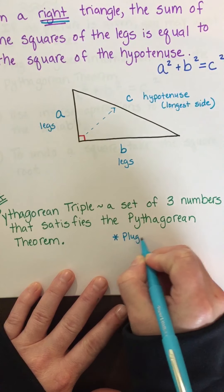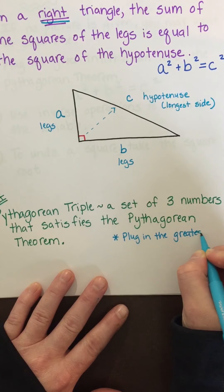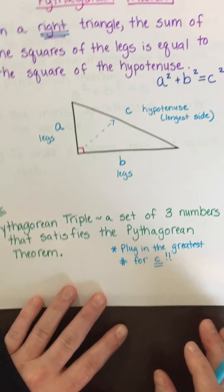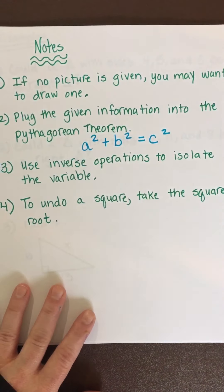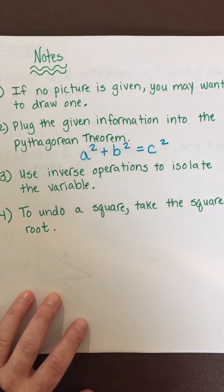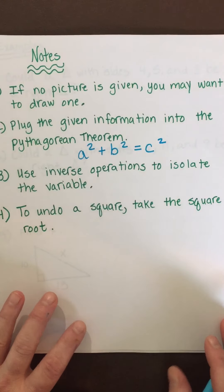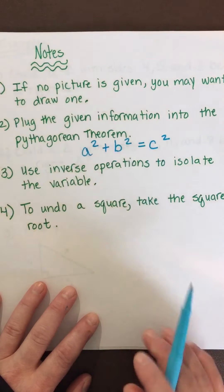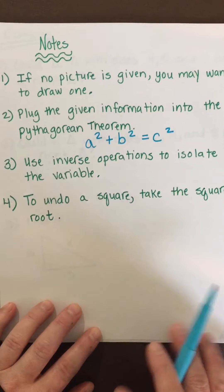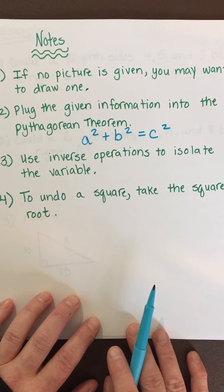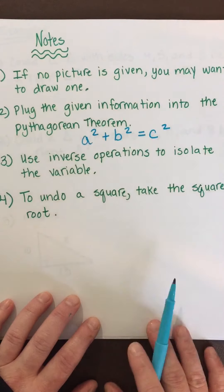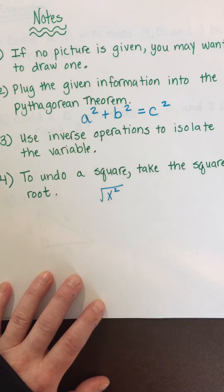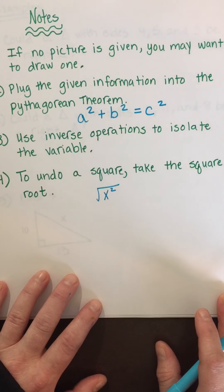It's super important to remember to plug in the greatest number for c. A couple of tips for solving these problems: if there isn't a picture given, draw one — it's extremely helpful, especially for word problems. Plug the given information into a squared plus b squared equals c squared. To isolate the variable, use inverse operations: subtract to undo addition, and take the square root to undo a square. Whatever you do to one side of an equation, you must do to the other.